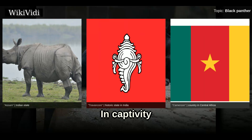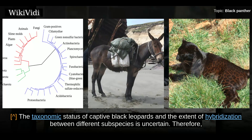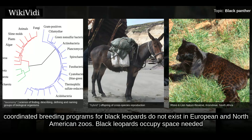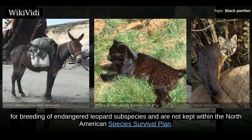In captivity, the taxonomic status of captive black leopards and the extent of hybridization between different subspecies is uncertain. Therefore, coordinated breeding programs for black leopards do not exist in European and North American zoos. Black leopards occupy space needed for breeding of endangered leopard subspecies and are not kept within the North American Species Survival Plan.